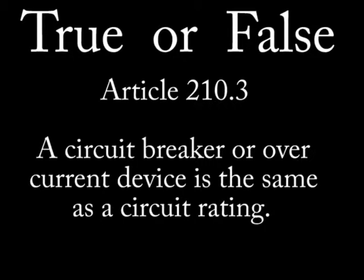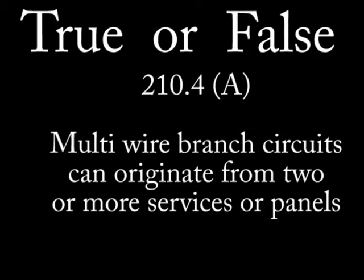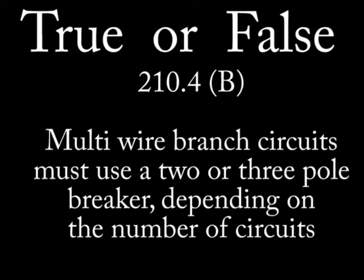Question 3: Article 210.3 exception — a circuit breaker or overcurrent device is the same as a circuit rating. Question 4: Article 210.4 section A — multi-wire branch circuits can originate from two or more sources. Question 5: Article 210.4 paragraph B — multi-wire branch circuits must use two or three pole breakers depending on the number of circuits.